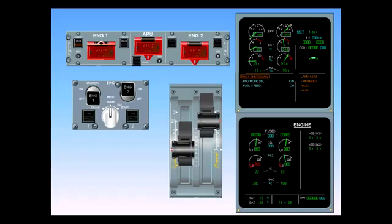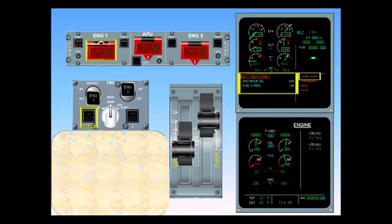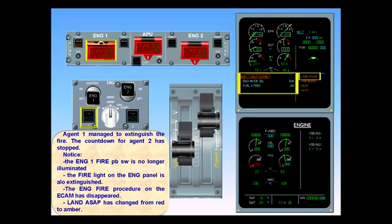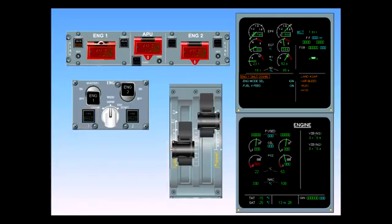Agent one managed to extinguish the fire. The countdown for agent two has stopped. Notice, the engine one fire switch is no longer illuminated. The fire light on the engine panel is also extinguished. The engine fire procedure on the ECAM has disappeared. Land ASAP has changed from red to amber. Since the next steps are part of different chapters, we will stop here and proceed with the next failure.